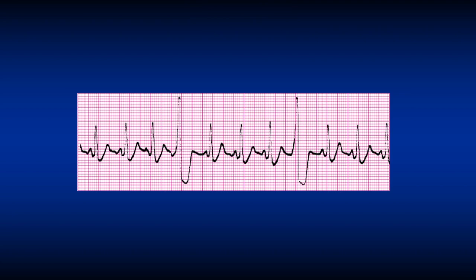Here we see three normal sinus beats, then a PVC, three normal sinus beats, then a PVC, and again this pattern continues throughout the strip. This repeating pattern is called quadrigeminy.